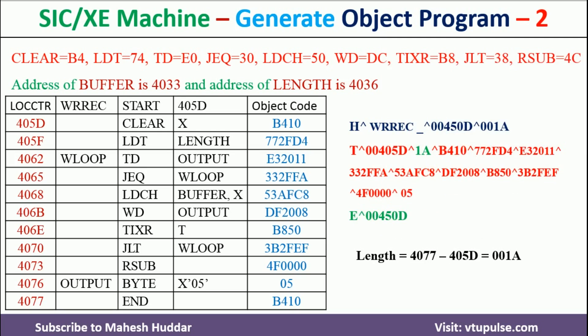The last part of the object program is the end record. It starts with E, followed by the starting address of the program: 00405D. This is how the object program looks for this particular SIC/XE program.